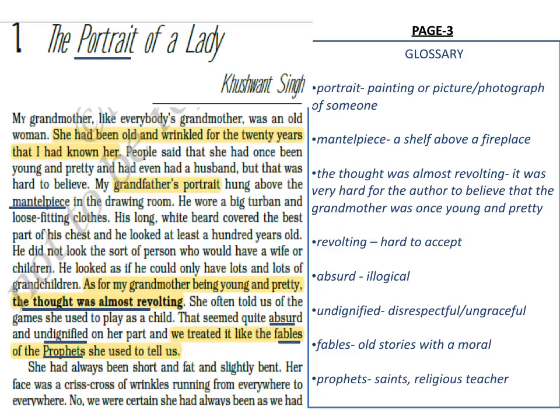A key point in this paragraph: the grandfather's portrait is a static one, whereas the grandmother's portrait is a dynamic one. It is a painter's rendition of the grandfather which depicts only his physical traits. On the other hand, the grandmother's portrait refers to her pen picture, which depicts her physical as well as emotional characteristics.